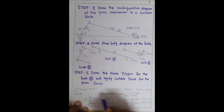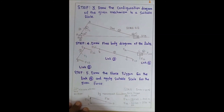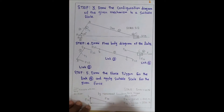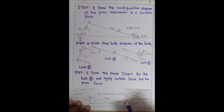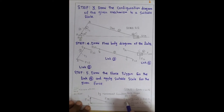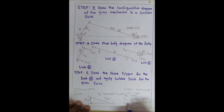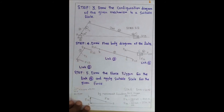From the drawn force polygon, by measurement: AB = 15 mm, which represents reaction force F14. Converting: 15 mm × 40 N/mm = 600 N. So F14 = 600 N. The length BO = 53 mm, which represents F34 (force on link 3). Converting: 53 × 40 = 2120 N. So F34 = 2120 N.